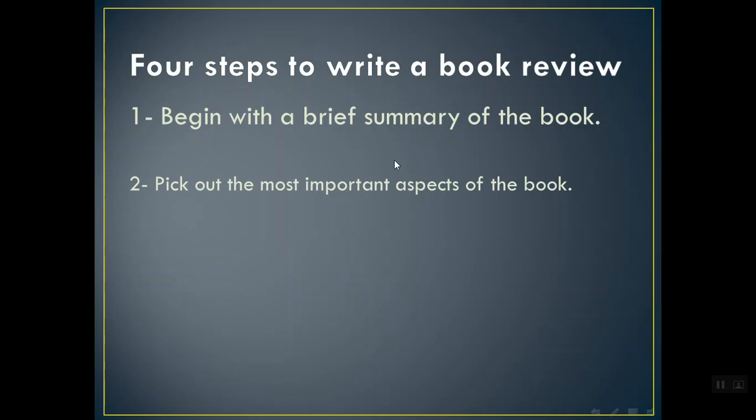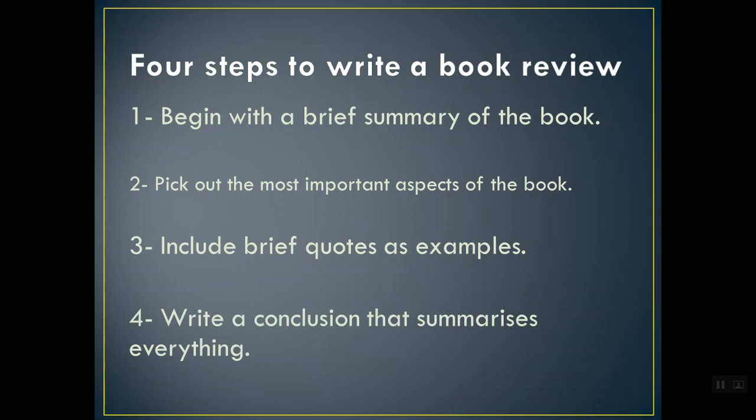Pick out the most important aspects of the book - أهم جوانب الكتاب تتكلم عنها. The third step is: include brief quotes as examples. Of course you are going to quote something from the book - تقتبس بعض الأشياء من الكتاب. Number four: write a conclusion that summarizes everything. So if you look at the four steps, we need to write about at least four paragraphs in a book review. The first paragraph will be an introduction, the two body paragraphs where you pick out the most important aspects and include brief quotes, and the fourth paragraph will be the conclusion.